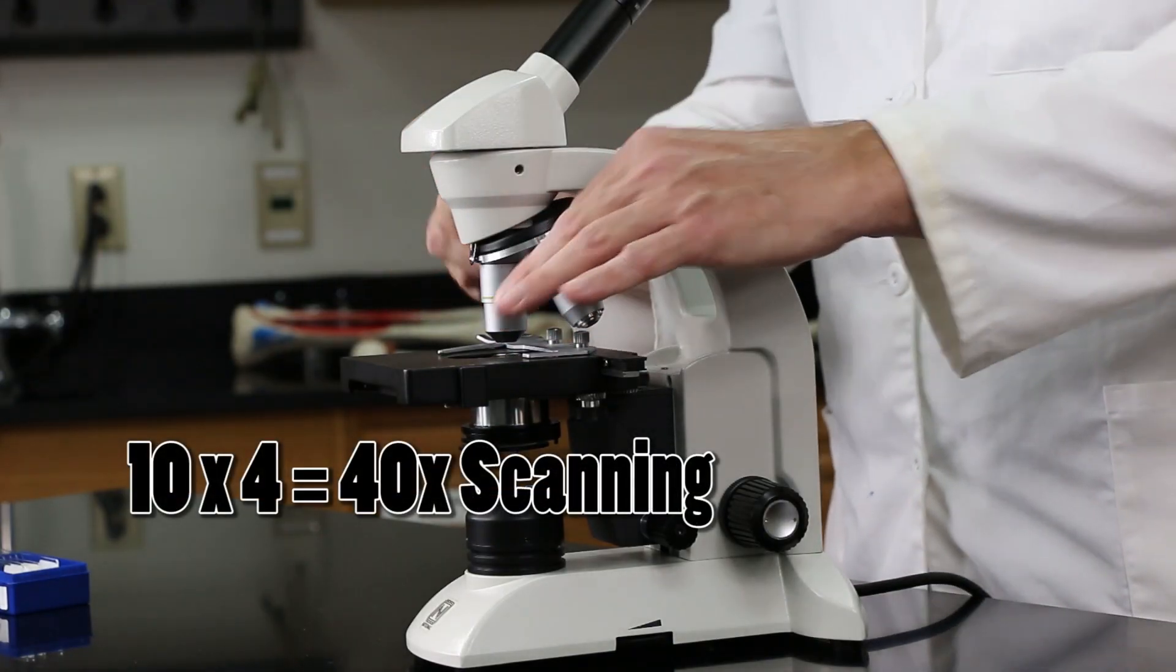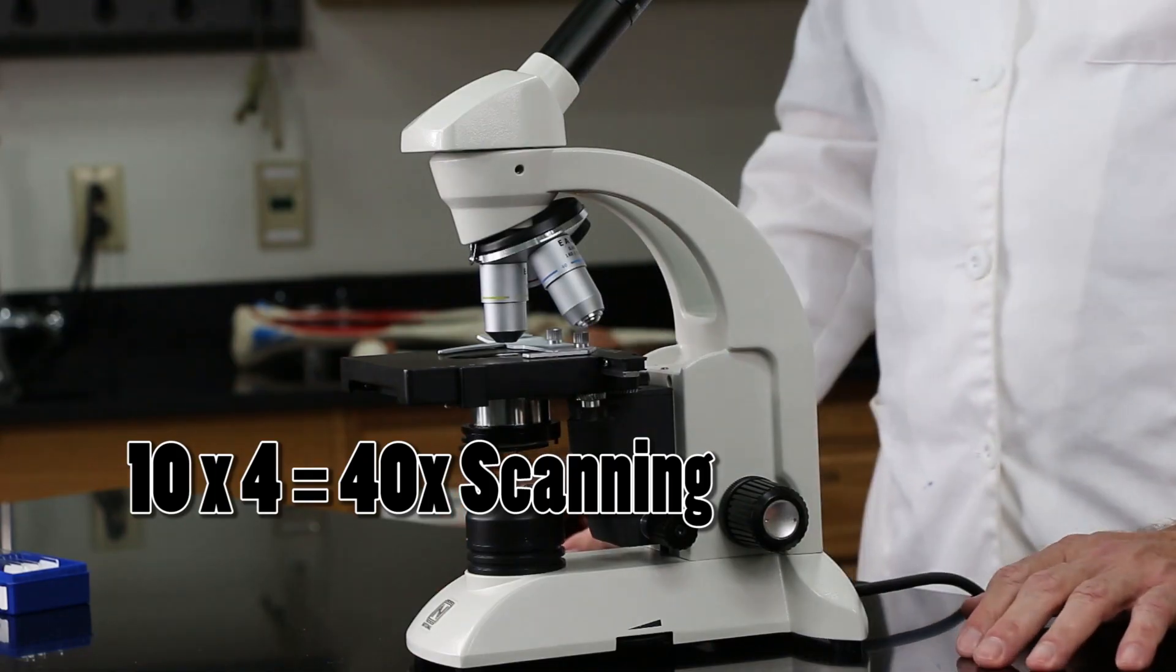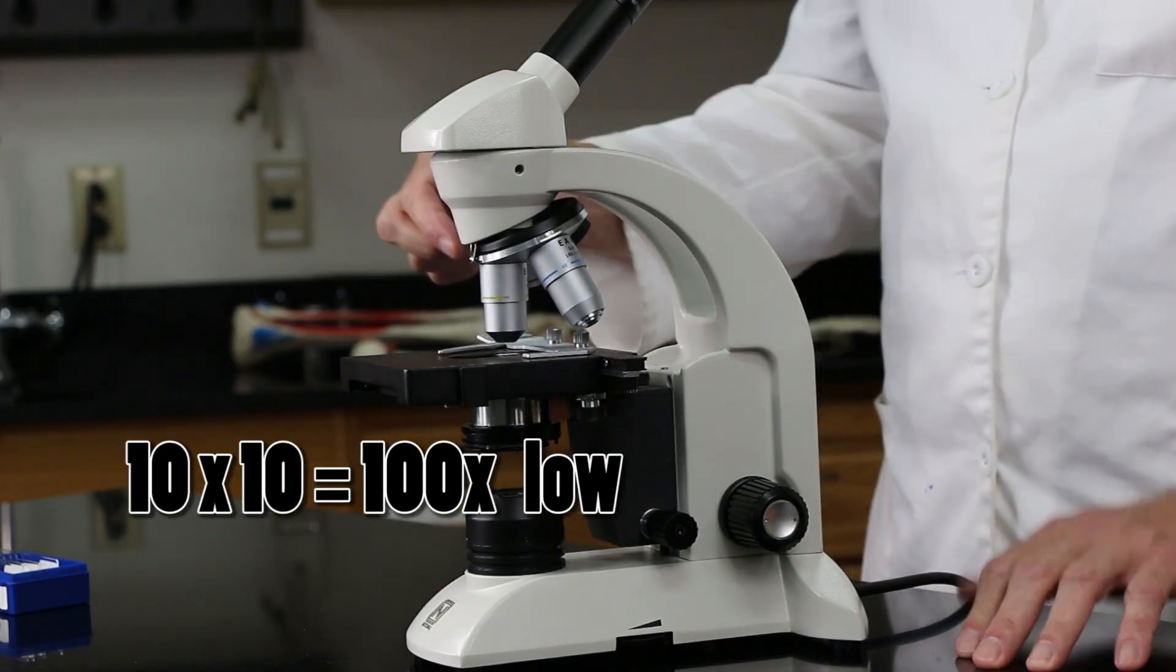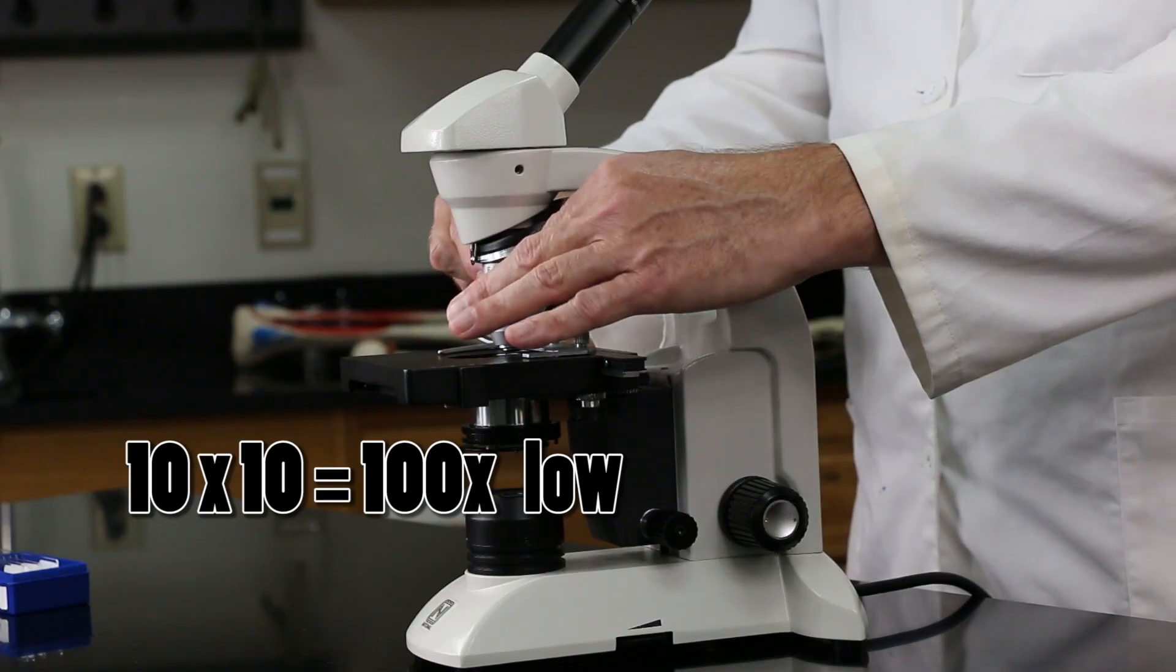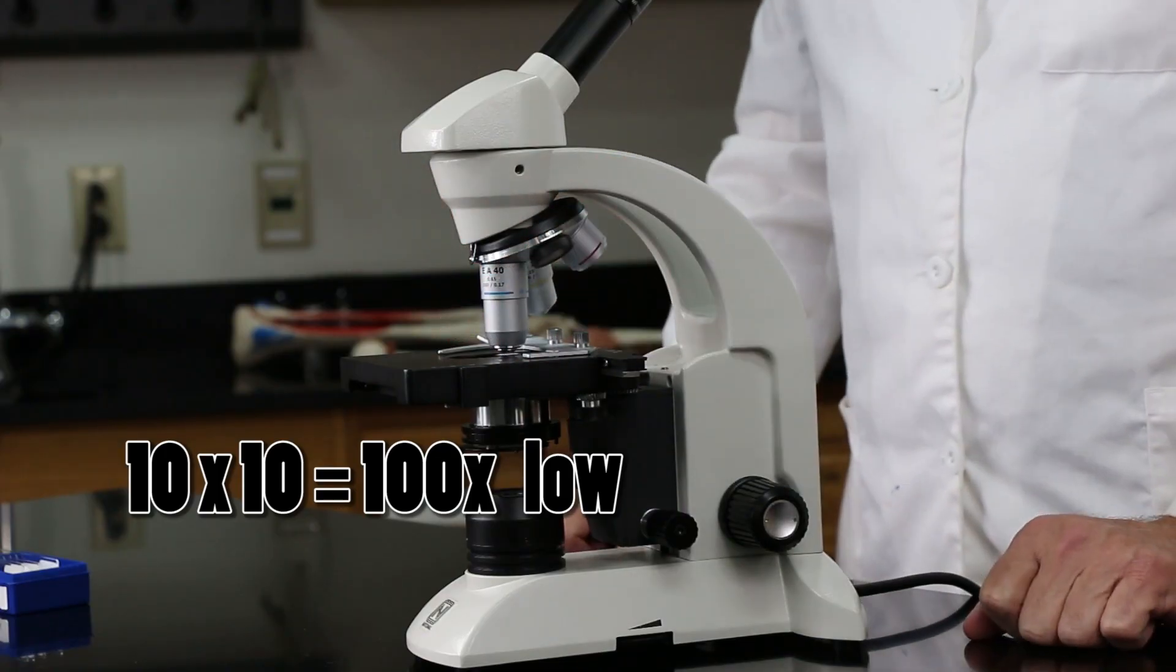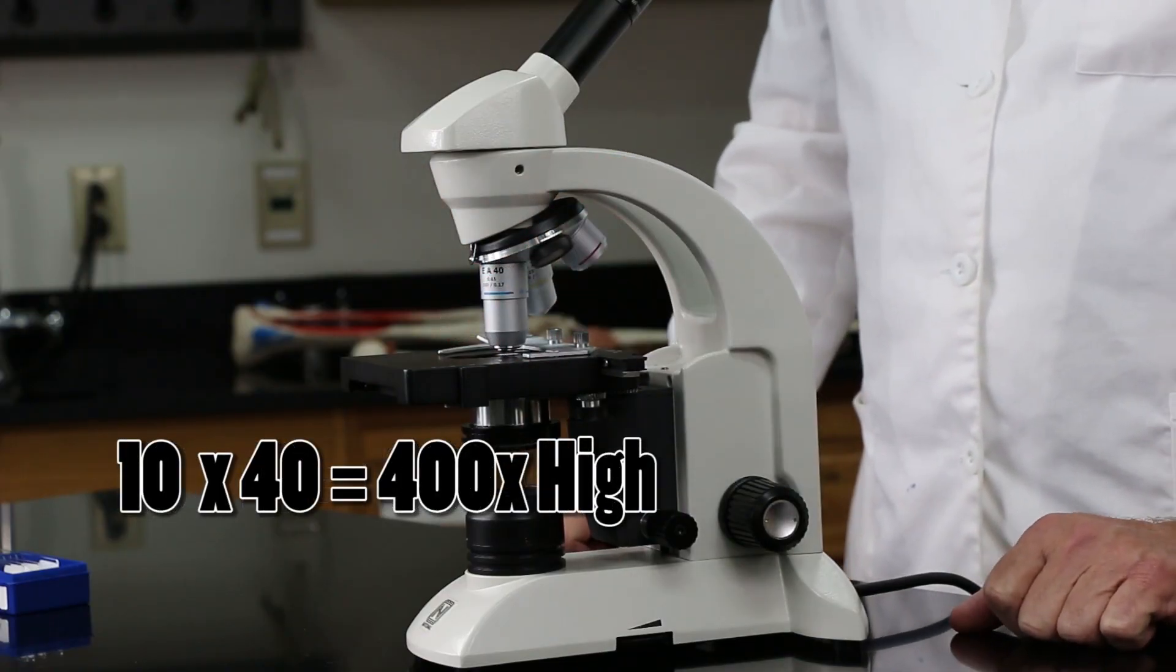If I turn it to the low power lens, that's 10x10, which is 100. And if I turn it to the high power lens, that is 10x40, which is 400.